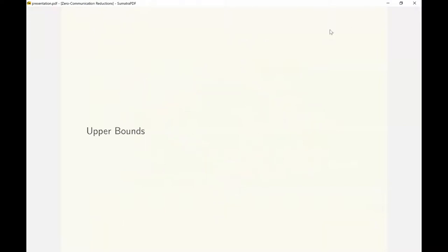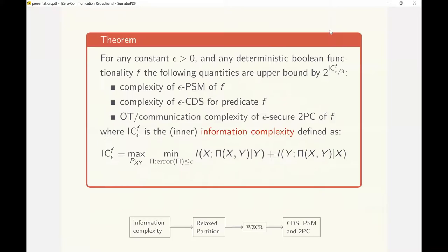Next, we present our upper bounds in more detail. The main theorem in this section can be stated as follows: for any epsilon greater than 0, there is an upper bound of 2 to the information complexity of the function f for all the following quantities.